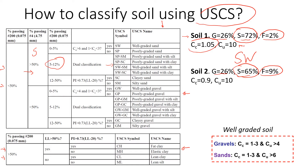For the dual classification we need to check the coefficient of curvature and coefficient of uniformity. The coefficient of curvature is less than 1, so it doesn't fall in the well-graded range, meaning the soil is poorly graded and the symbol is SP. This gives us SP-SM and SP as possibilities. Because we don't have enough information about how much silt versus clay makes up the 9 percent fines, we write both answers: SP-SM and SP.